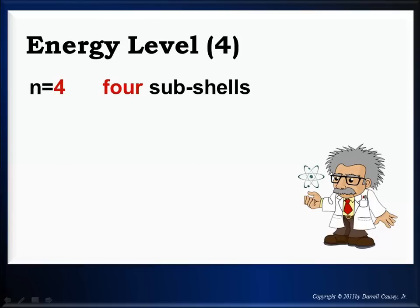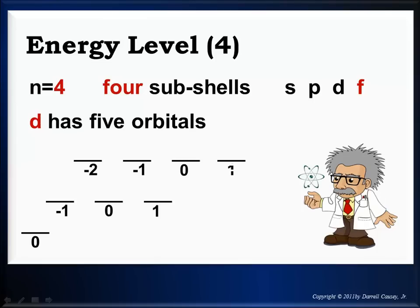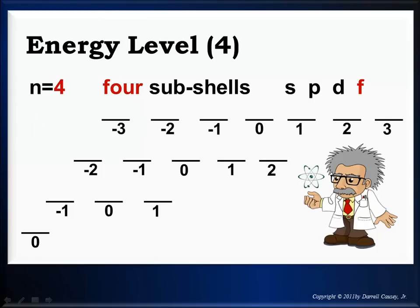Fourth energy level. I'll bet you've probably already figured this one out. s, p, d and f. Let's look at our f's have 7 orbitals. And it's very important that we understand these. Since there aren't any sub-levels beyond f, I'm not going to go through any of the other energy levels.